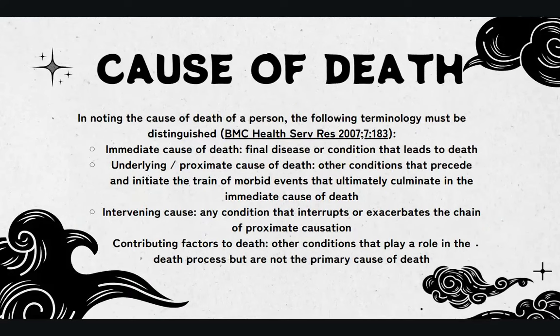In noting the cause of death of a person, the following terminology must be distinguished. Immediate cause of death: the final disease or condition that leads to death. Underlying or proximate cause of death: other conditions that precede and initiate the train of morbid events that ultimately culminate in the immediate cause of death. Intervening cause: any condition that interrupts or exacerbates the chain of proximate causation. Contributing factors of death: other conditions that play a role in the death process but are not the primary cause of death.